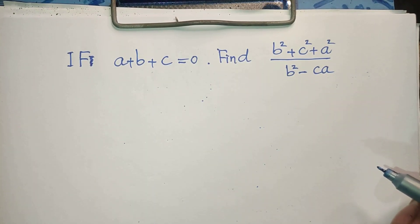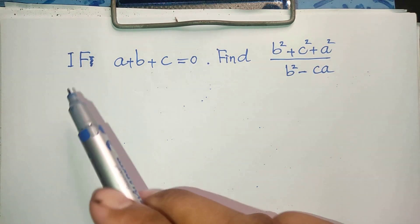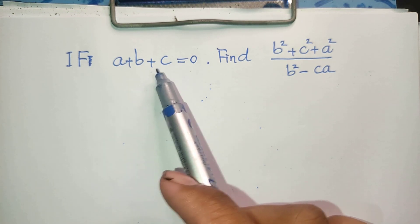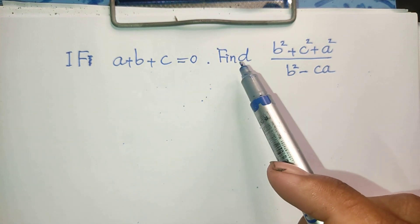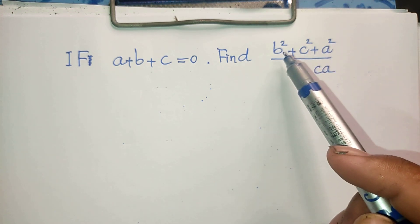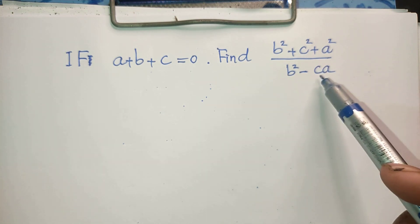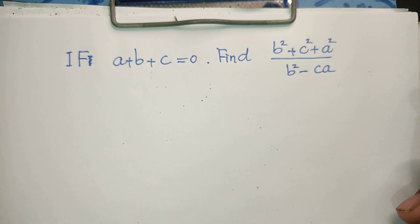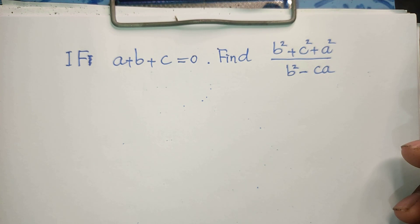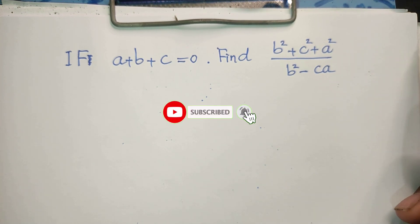Hello everyone, welcome to my YouTube channel. Today I have one exercise: if a plus b plus c equals zero, find the value of the expression b squared plus c squared plus a squared, divided by b squared minus ca. If you know how to solve this, please try it first, then come back to watch my video from beginning to end to verify your solution.